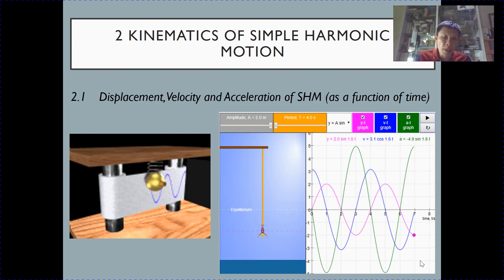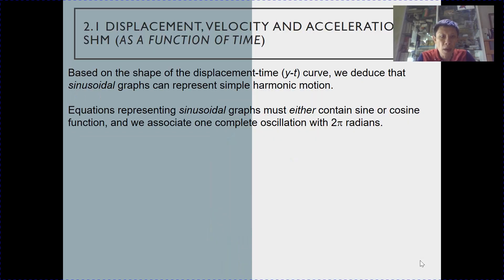If you look at the simple animation on the slide now, you can see that as the object is moved up and down under the influence of the spring, it will trace a wave-like graph at the background. You can also see this when you try out the simulation in SLS. The displacement time graph will look like a sinusoidal graph. Based on this shape of the displacement time graph, we can deduce that a sinusoidal graph can represent simple harmonic motion.